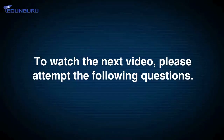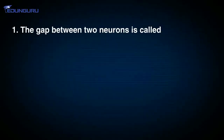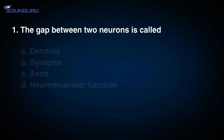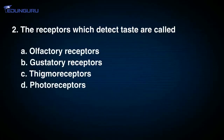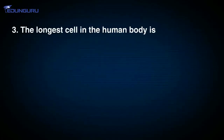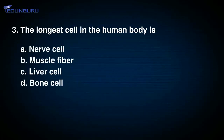And now, my dear children, to watch the next video, please attempt the following questions. Question 1: The gap between two neurons is called — A. Dendrite, B. Synapse, C. Axon, D. Neuromuscular junction. Question 2: The receptors which detect taste are called — A. Olfactory receptors, B. Gustatory receptors, C. Thygmore receptors, D. Photoreceptors. Question 3: The longest cell in the human body is — A. Nerve cell, B. Muscle fiber, C. Liver cell, D. Bone cell.